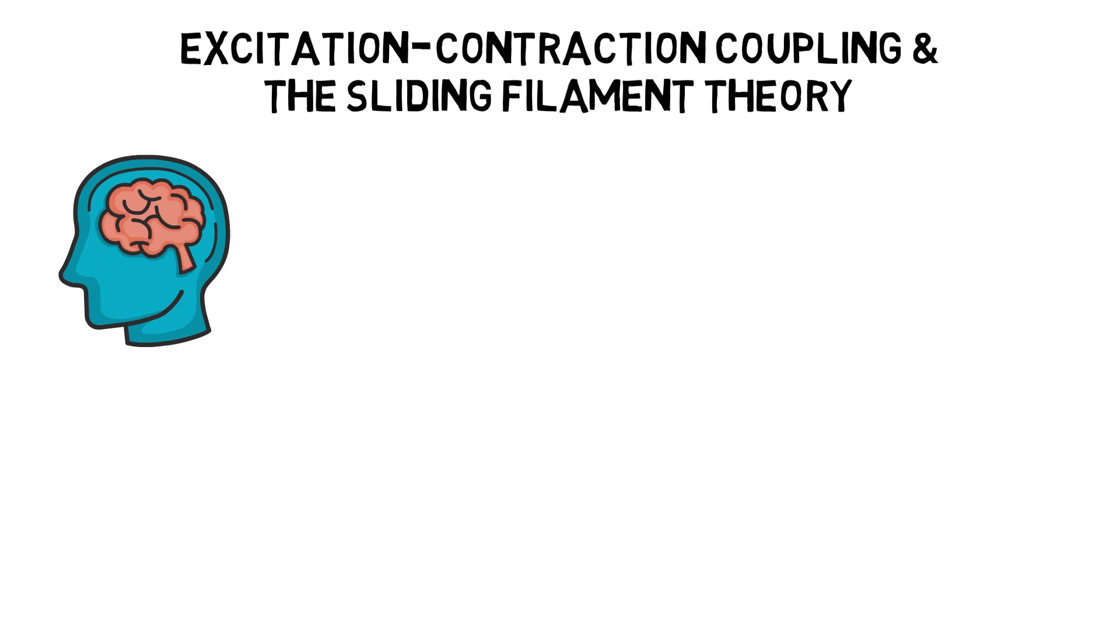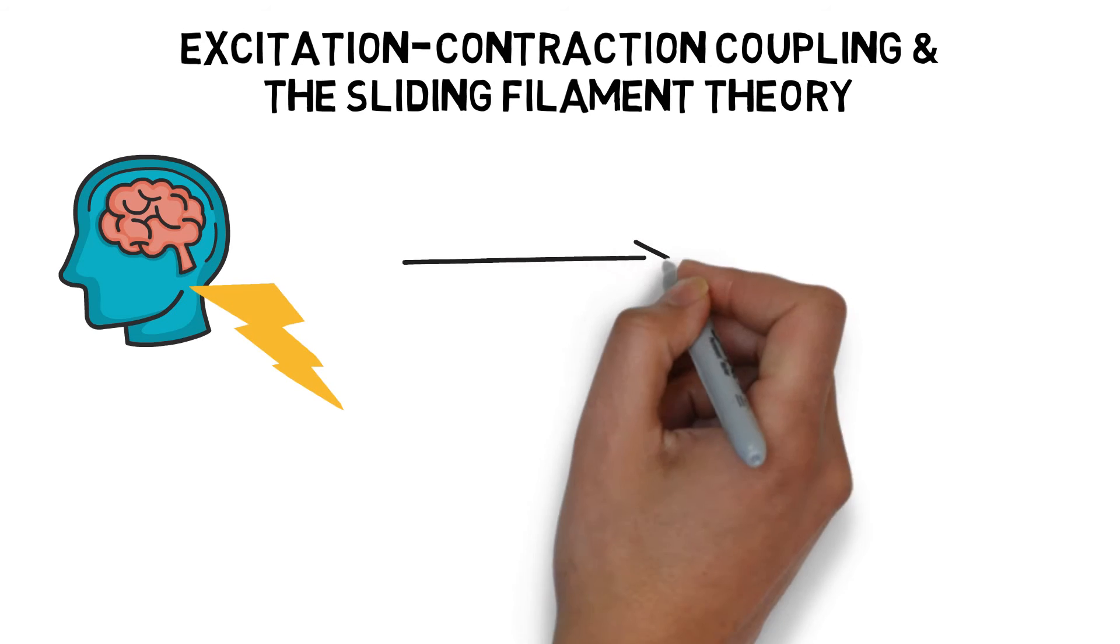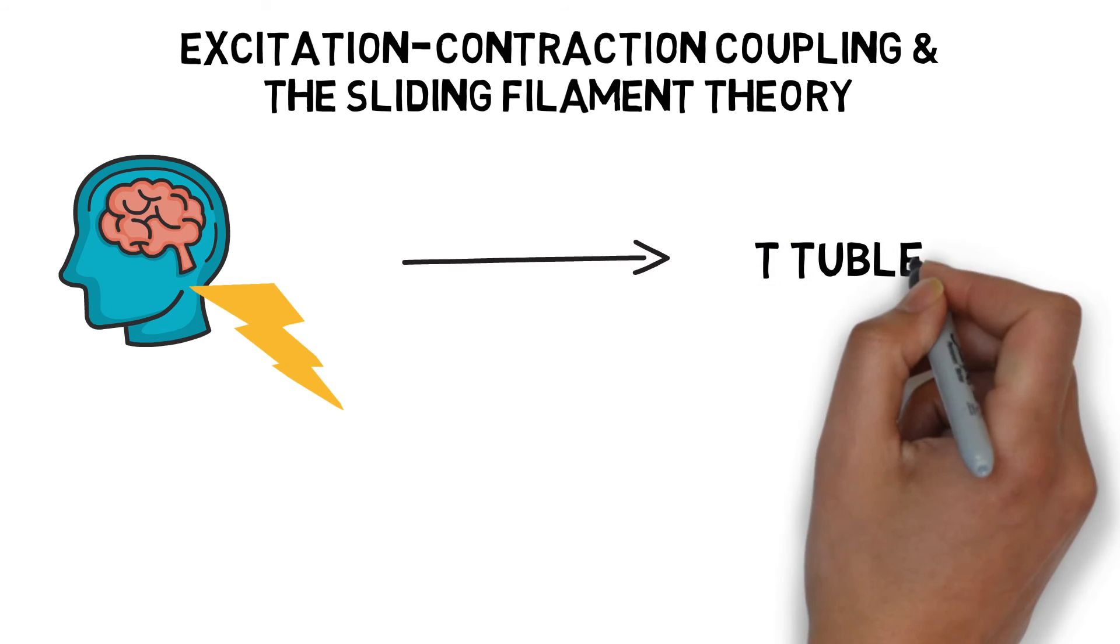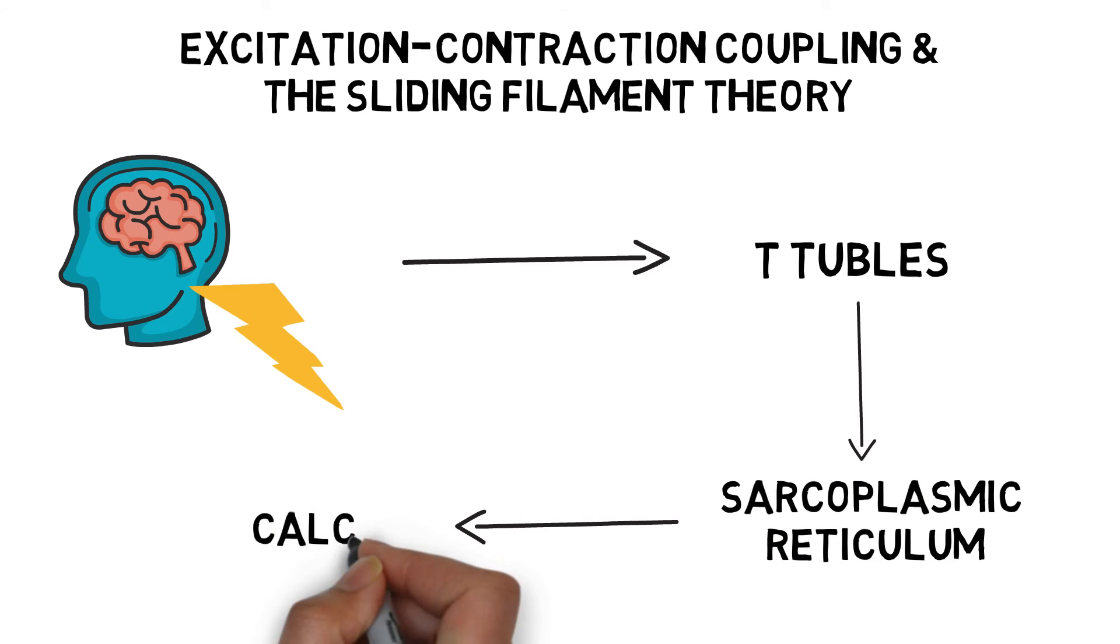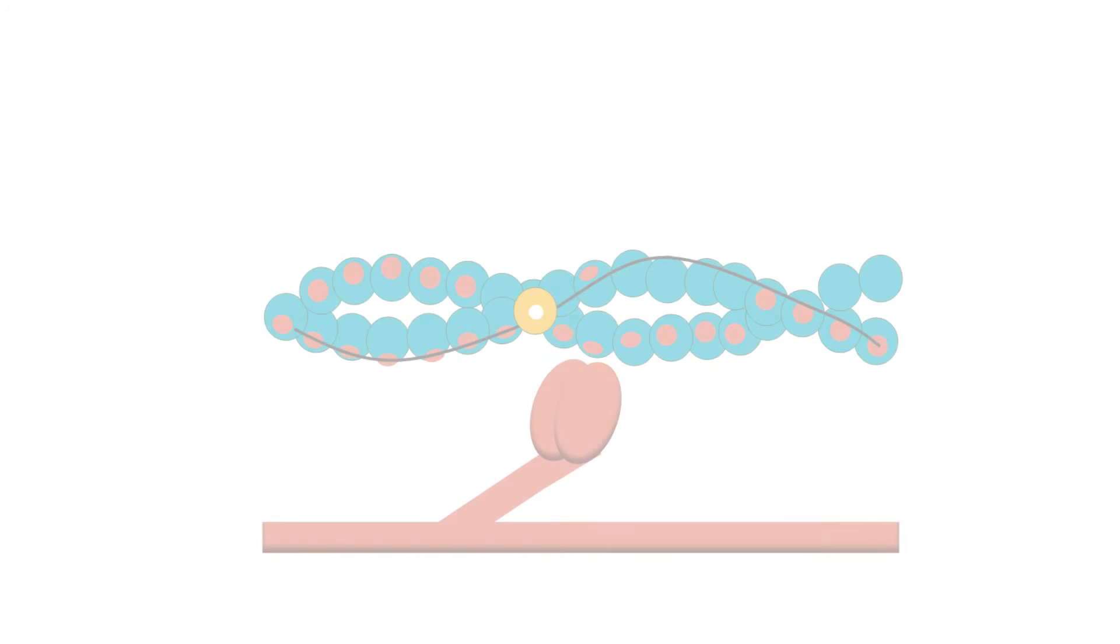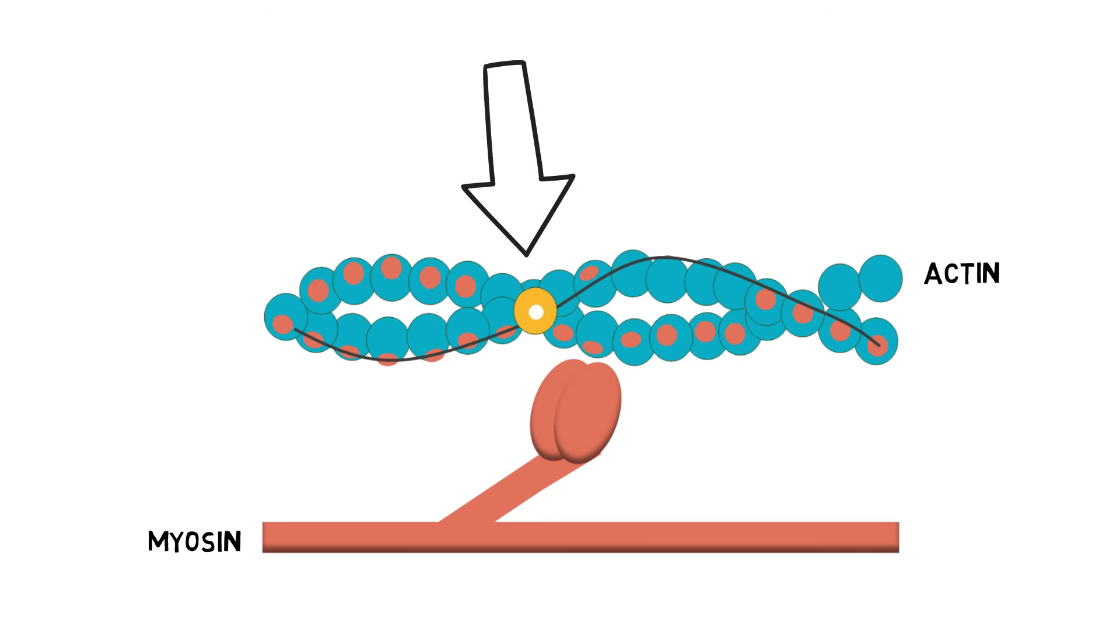A nerve impulse arrives from the brain, triggering a muscle action potential. The action potential travels down the T-tubules which triggers the release of calcium from within the sarcoplasmic reticulum. The calcium then binds with troponin, removing the blocking action of tropomyosin which exposes the crossbridge binding site for myosin.